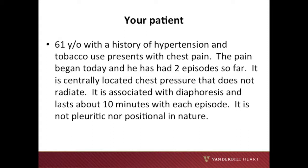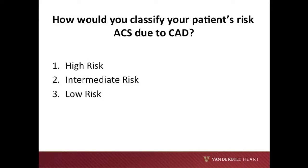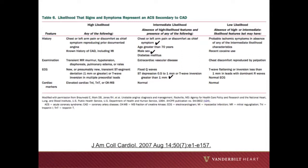Your patient is a 61-year-old with a history of hypertension and tobacco use presenting with chest pain. The pain began today, and there have been two episodes. It is centrally located chest pressure that does not radiate. It is associated with diaphoresis and lasts about 10 minutes with each episode. It is not pleuritic nor positional. He has no family history of premature coronary artery disease and does not use illicit drugs. His cardiac biomarkers are normal, and his EKG shows 1mm T-wave inversion in his inferior leads. Based upon the information provided, how would you classify this patient's risk of ACS due to CAD? That's correct — this patient would be classified as intermediate risk. From review of the chart, the patient had none of the signs or symptoms listed under high likelihood, but did have chest or left arm pain as their chief symptom, the patient was male, and the patient had T-wave inversion greater than 1mm.